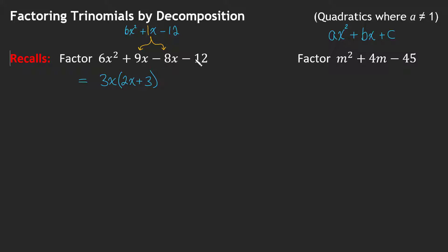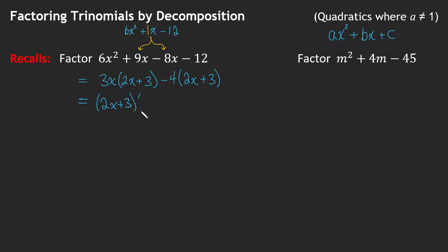In the next two terms, I'll factor them as a pair. I'm going to factor out a negative 4, because that's what they have in common. Don't forget that the signs change on the items as you factor out a negative. So I end up with 2x + 3. That means I have a 2x + 3 here and a 2x + 3 here — that is common. So we have (2x + 3)(3x − 4), and that is the factorization of this four-term statement.